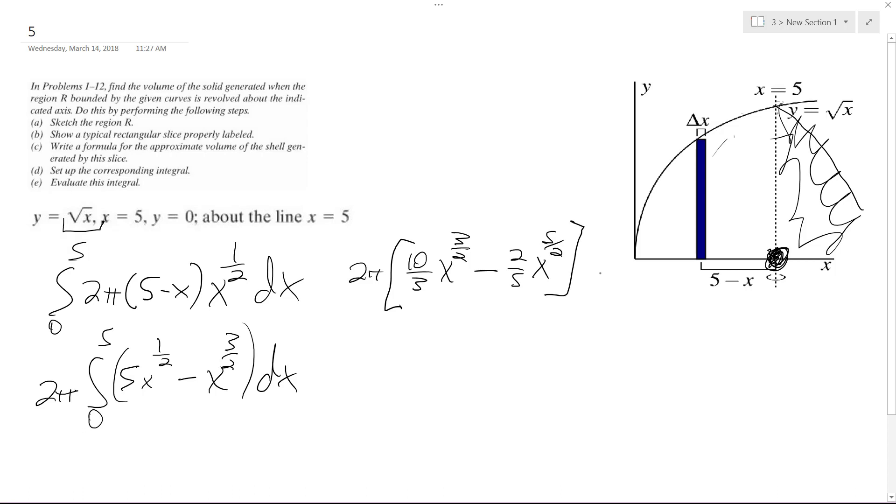This is after I integrate from zero to five, and ultimately what we end up with is a volume, ten times five raised to the three halves over three minus two, five raised to the five halves over five.